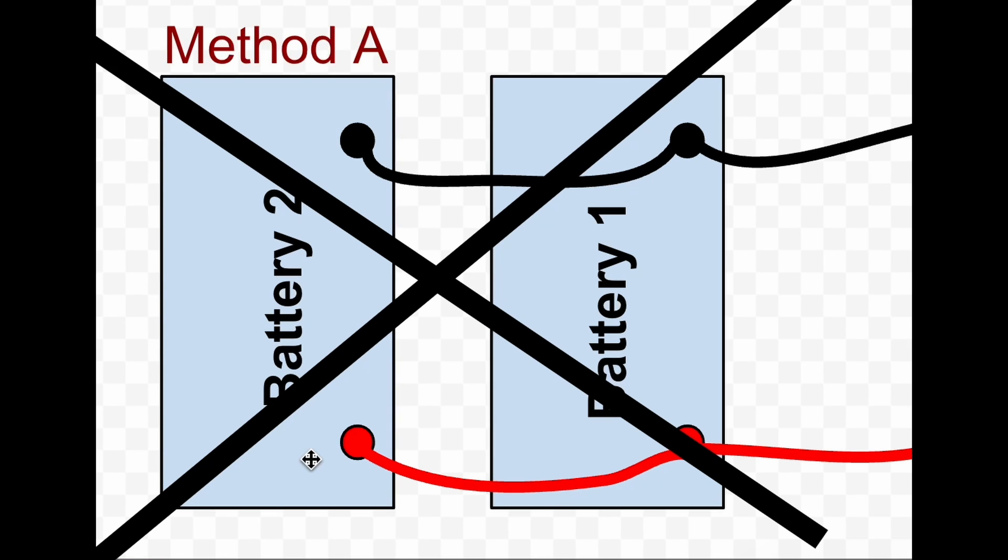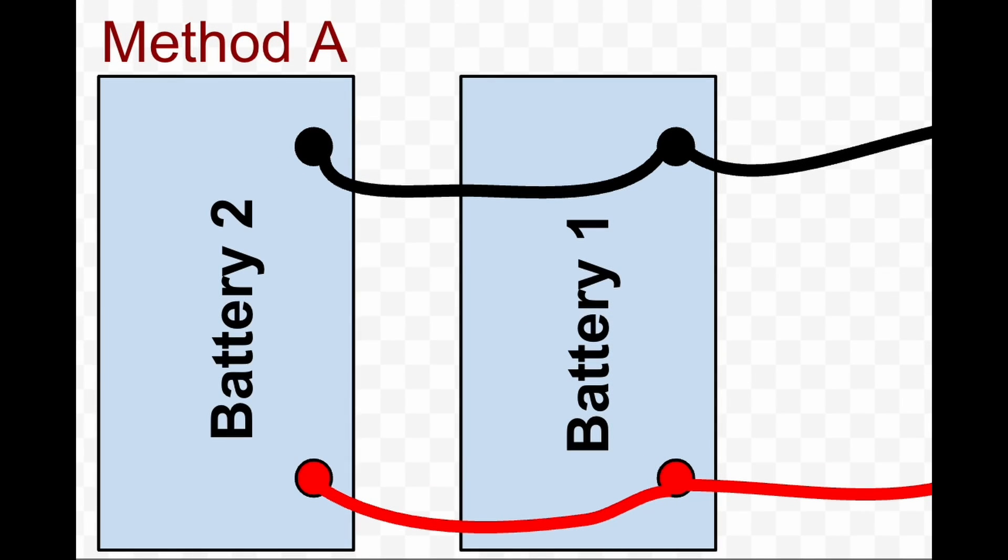This looks like the most common sense way, but I'll show you another method. I've made a couple of drawings - one set of batteries labeled Method A and one set Method B. In Method A, the battery cable goes from battery 2 to battery 1, then to the source.